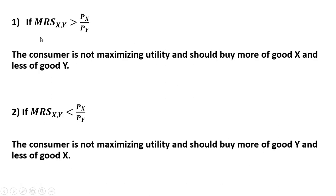So, if the marginal rate of substitution of good x for good y exceeds this price ratio, the consumer is not maximizing utility and should buy more units of good x and less of good y.